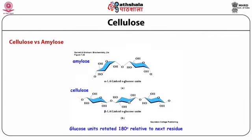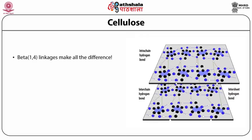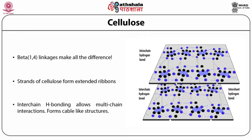Comparing cellulose versus amylose: amylose has alpha-1,4-linked D-glucose units, while cellulose has beta-1,4 linkage, and this makes all the difference. Strands of cellulose form extended ribbons, and interchain hydrogen bonding allows multi-chain interactions forming a cable-like structure. Because of this complex structure and the beta linkage, cellulose is more resistant to hydrolysis — both enzymatic and non-enzymatic — giving plant fibers relatively higher strength than alpha-linked polysaccharides.